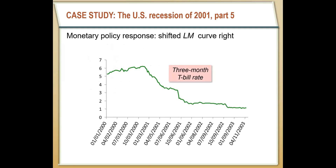At the same time, the Fed decreased interest rates to counteract the decline in total spending by giving people more money to spend. They cut interest rates and increased the total money supply really quickly. Interest rates were about 6% back in 2000, but the Fed identified the economy was going into recession and decreased the rate drastically — from 6% at the start of 2001 to about 1.5% by the end of 2001 — to increase spending and provide people the cash they needed.